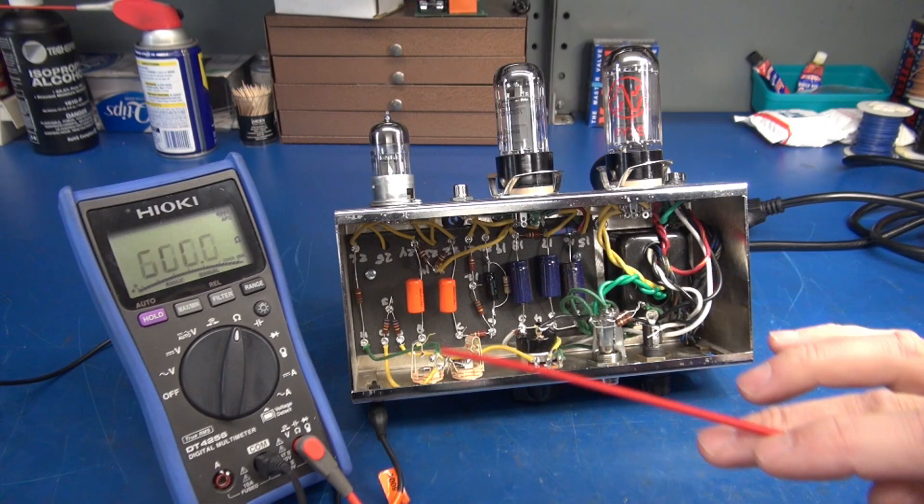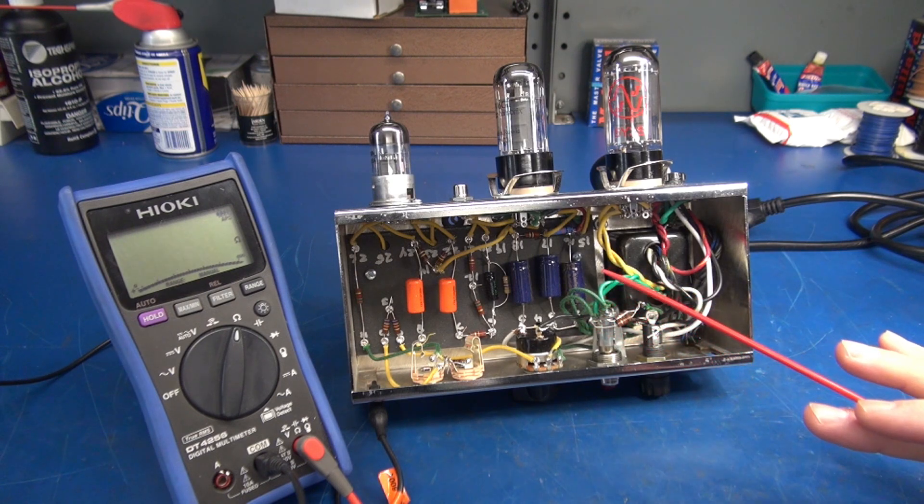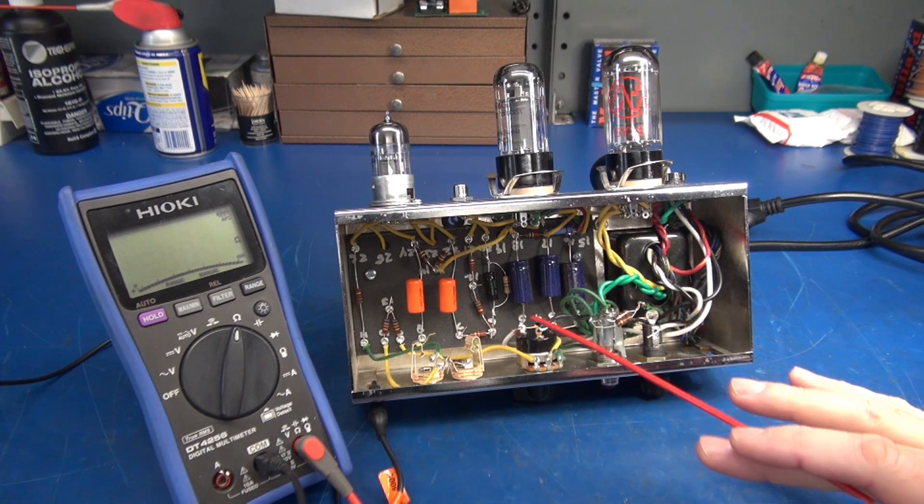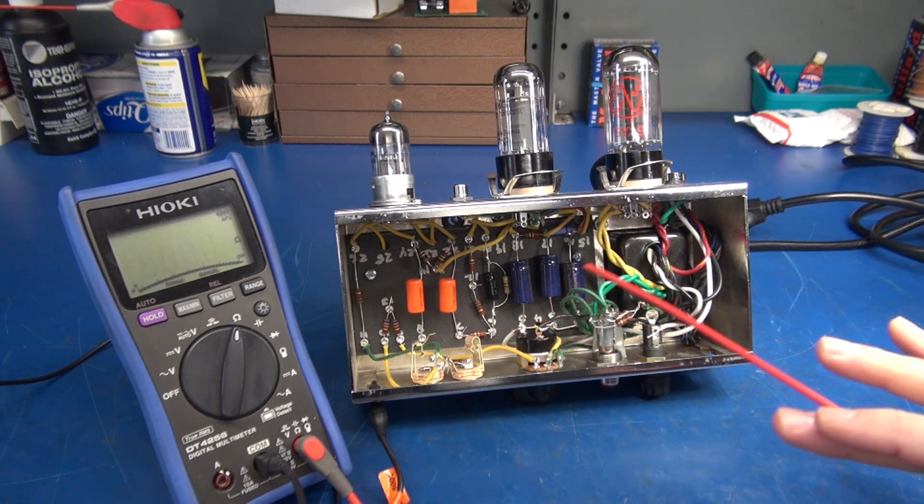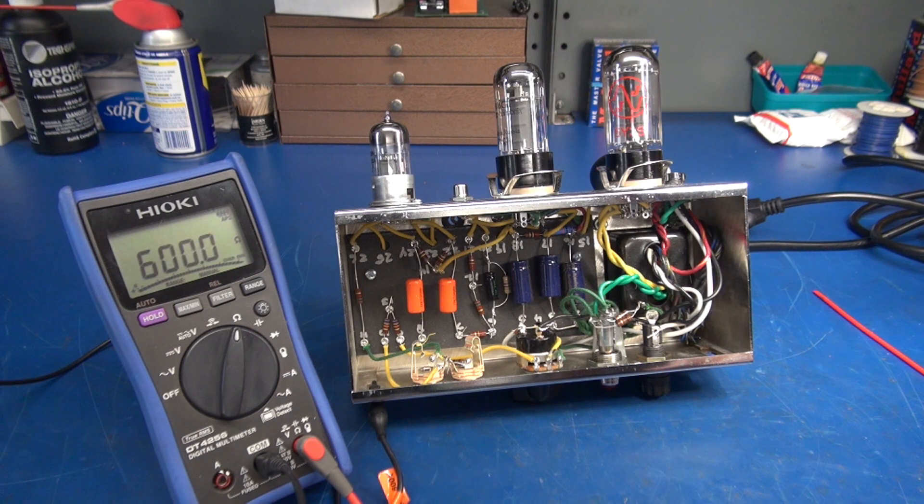Well, I performed my visual inspection and I do not see anything here that alarms me. There's no smoked components. Connections look decent. Everything looks to be laid out well. So the next step is to verify the grounds because those always seem to be the troublemakers in these kit amp builds.